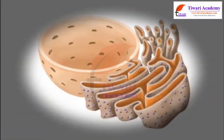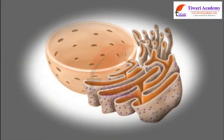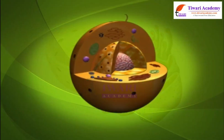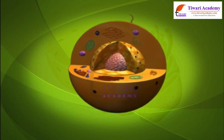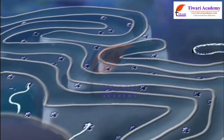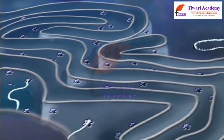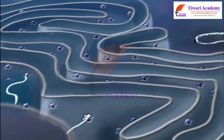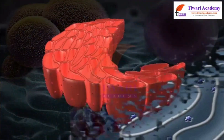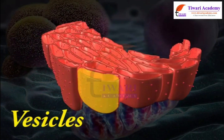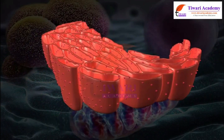The endoplasmic reticulum is a network of tubules and flattened sacs that serve a variety of functions in a cell. It is a large network of membrane-bound tubes and sheets, and has structures like long tubules or round bags called vesicles.